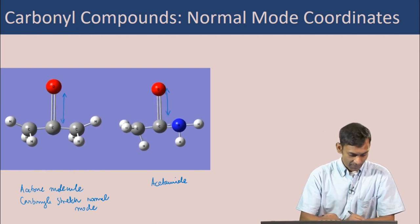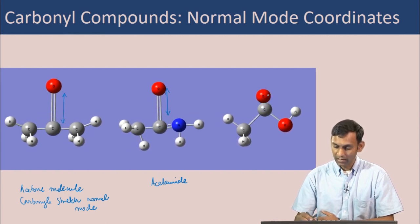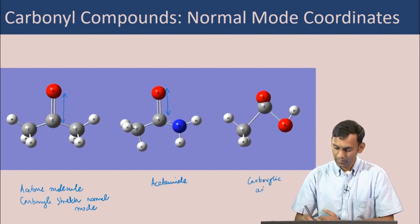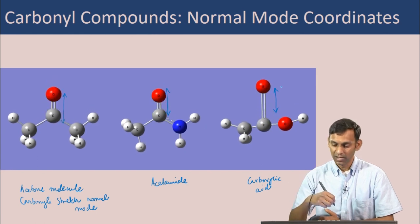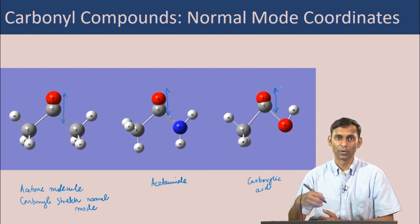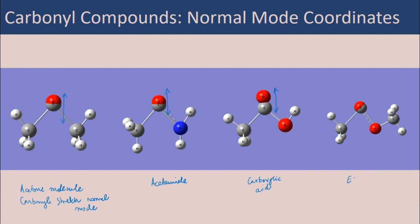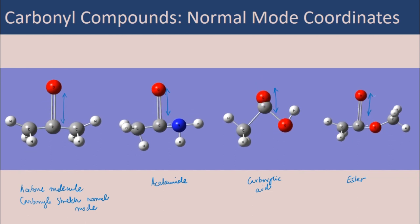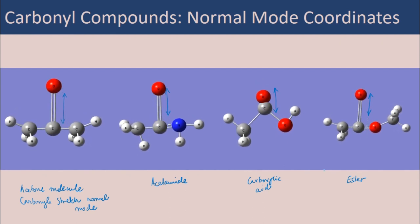In a carboxylic acid — which has both a CO carbonyl bond and a COH group — the carbonyl stretch is again the predominant motion in the corresponding normal mode, but other motions also contribute. Similarly, in an ester, the carbonyl stretch is the major motion that allows us to call this normal mode the carbonyl stretch, but other atomic motions are also present. This illustrates that although we name normal modes after the dominant motion, the exact character depends on the specific molecule.